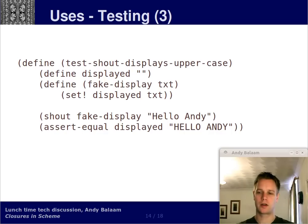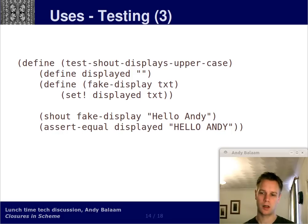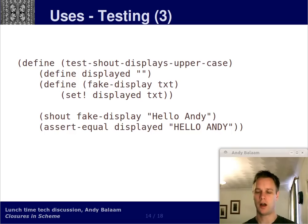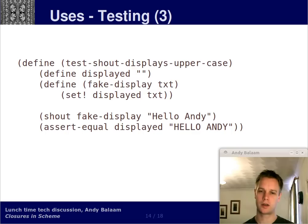We're not really using the closure here — we're using the outer scope. This is something I do a lot in JavaScript: I have a test function, a variable I set to null at the beginning, and then provide some kind of function overriding some function of the thing I'm testing. In that test code I set the variable to something useful, and at the end of the test function I check that it was set to the thing I expected it to be set to. It's a really nice way of working, particularly good for highly dynamic languages like JavaScript or Scheme.